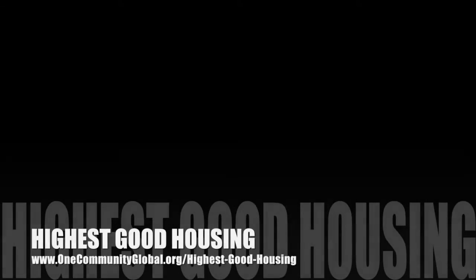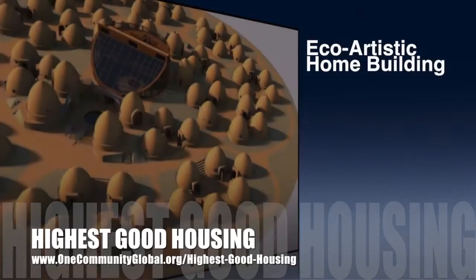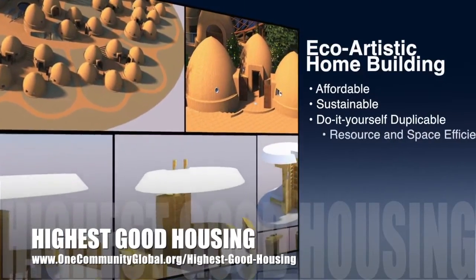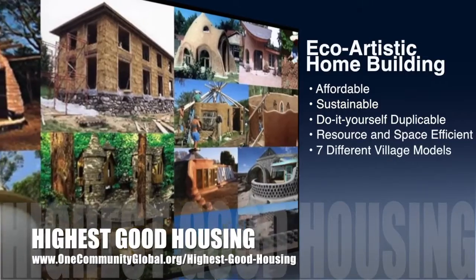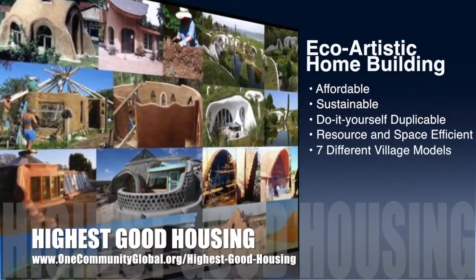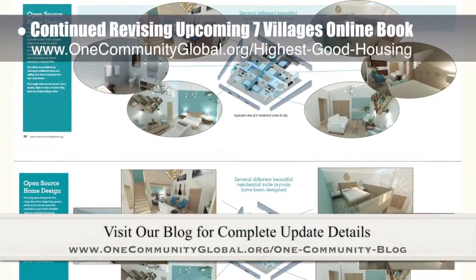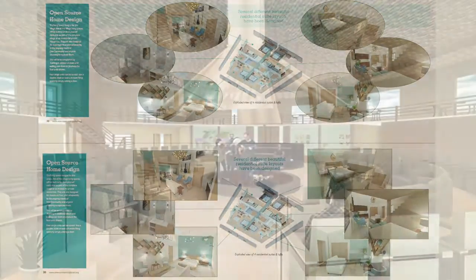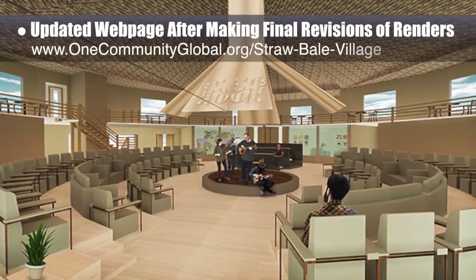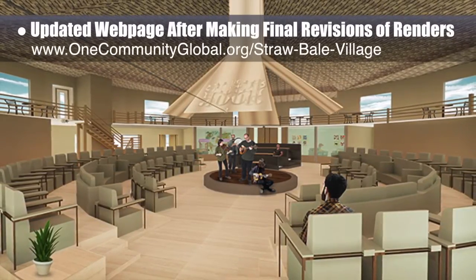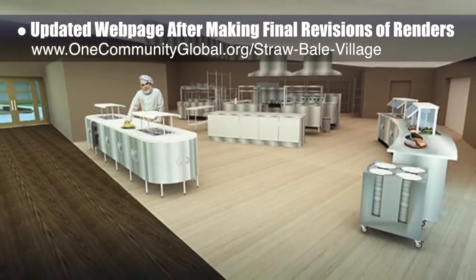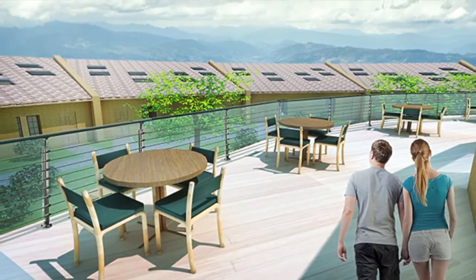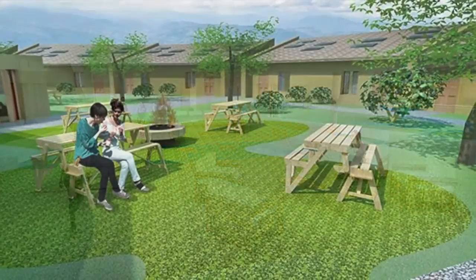The OneCommunity approach to highest good housing is eco-artistic home building that is affordable, sustainable, do-it-yourself duplicable, resource and space efficient, and consists of seven different sustainably constructed village models. This week, the core team continued with layers of revisions for the upcoming Seven Villages online book. This week's focus was refining the two Straw Bale Village Pod 2 layouts and then updating the book and website after final revisions and additions to renders of the open-source chimney, the kitchen, the bathroom exterior, the gym, outdoor patio area, the barbecue area, and the outdoor fire pit.